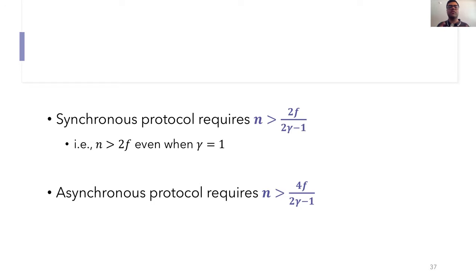So that's pretty much the gist of our protocol. There's a few more considerations that need to be dealt with carefully, but I won't go into detail of them here. In terms of adversarial corruption threshold, our synchronous protocol requires n greater than 2f over 2 gamma minus 1. So in the easiest case of gamma equals 1, we still require an honest majority. The asynchronous protocol will require n greater than 4f over 2 gamma minus 1.